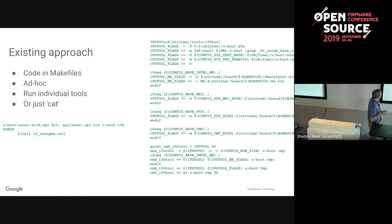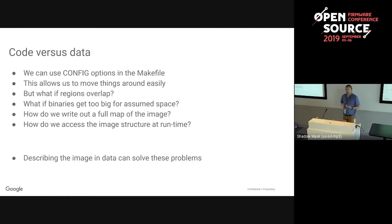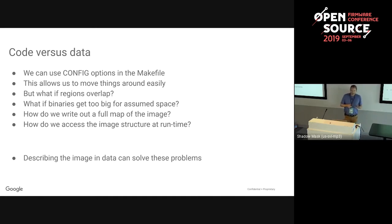With the ad hoc approach you can't figure out where everything is in the image because everything's behind config flags. You can't detect things overlapping, you can't detect a binary getting too big for its allocated space, and you're not sure how to access the position of something at runtime. Describing the image in data can solve these problems.